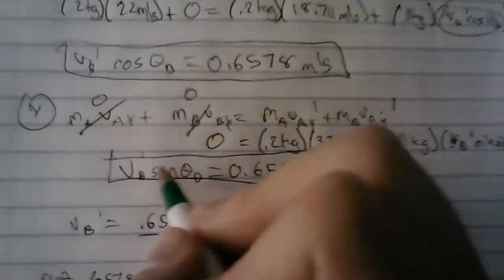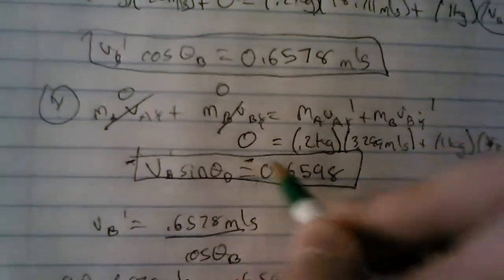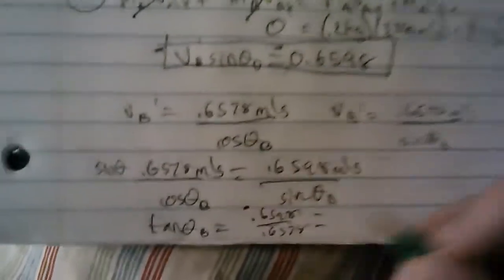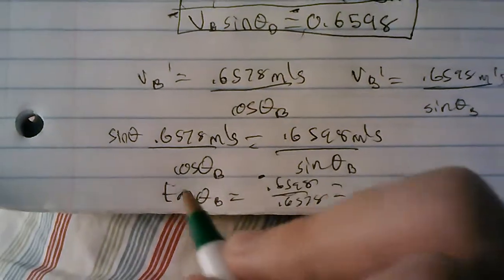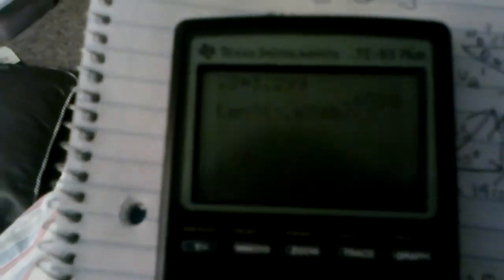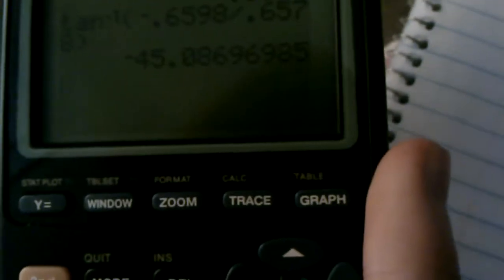So what we're going to do is multiply both sides by sine. Sine over sine is 1, so this will be sine theta over cosine theta, which will equal tangent. So tangent of theta B equals 0.6598 over 0.6578. And actually, this should be a negative right here, because it's going downwards. So we take tan to the negative 1 of this value. So tangent to the negative 1 of negative 0.6598 divided by 0.6578 equals almost exactly negative 45 degrees. I'll just write down negative 45 degrees right here.